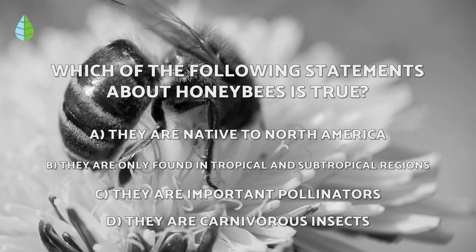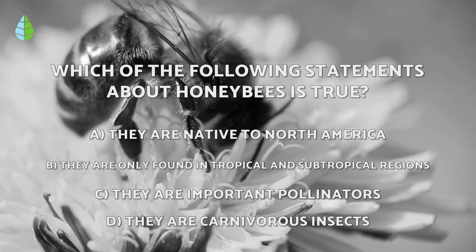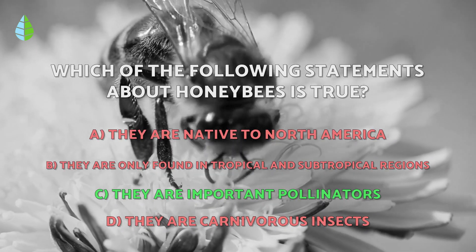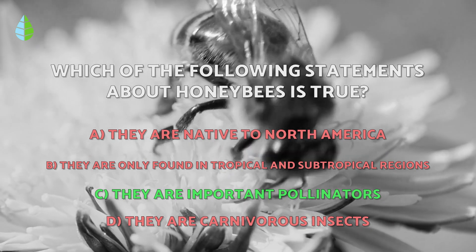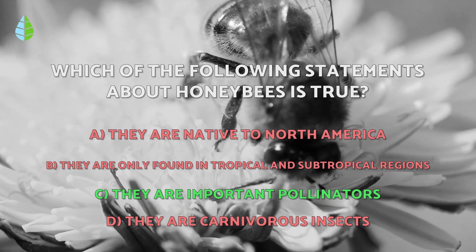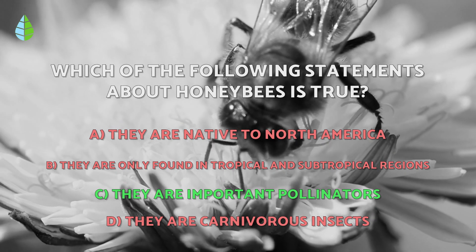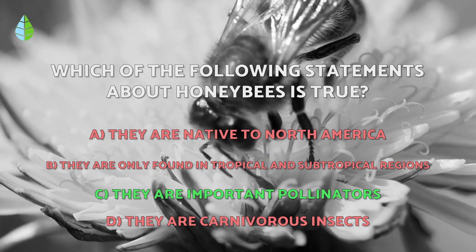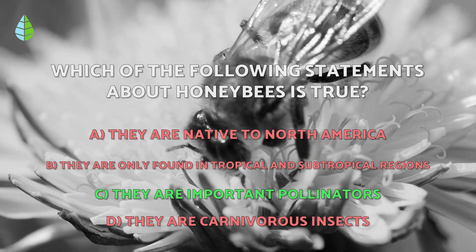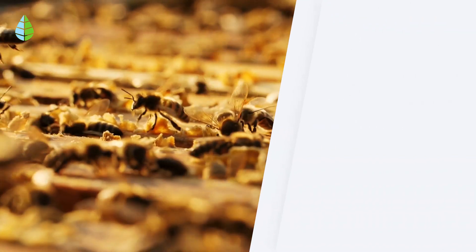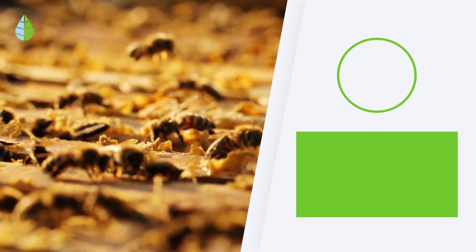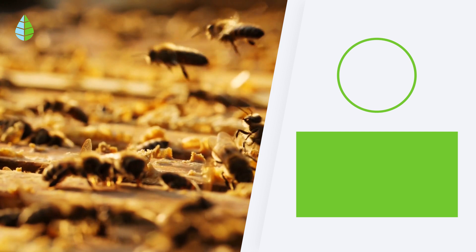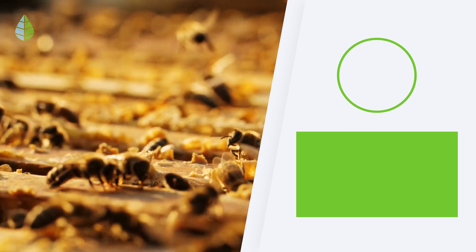Going back to the question we asked you earlier — have you thought it over? The correct answer is C: they are important pollinators for agricultural crops and wild plants. Honeybees are crucial pollinators for many plant species, including agricultural crops and wild plants. Their role in pollination is essential for the production of fruits, vegetables, and seeds. Tell us, would you like to learn more about bees? Until next time, eco-friends!